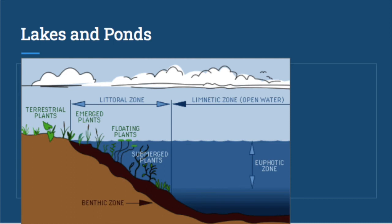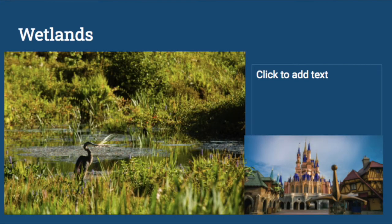The limnetic zone extends as deep as light can reach. In most lakes and ponds this reaches the bottom, but in very deep lakes you might also have the profundal zone, where there is no light. Because there is no light, there are no producers and not a lot of plant life. The muddy bottom zone is known as the benthic zone — it's really rich in nutrients and allows a lot of different life to live there.